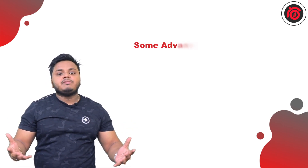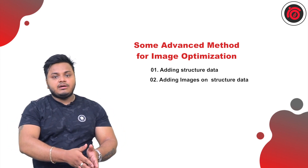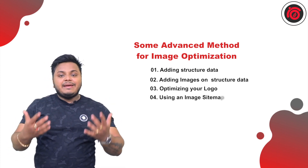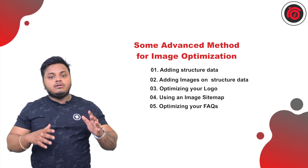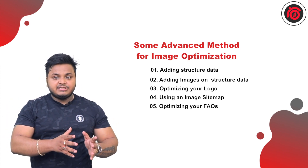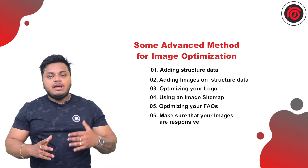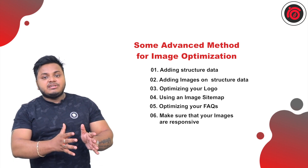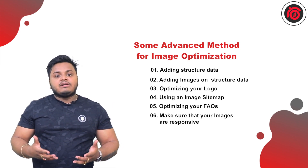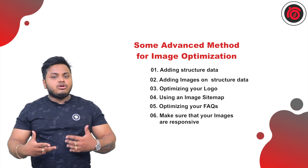Some of the advanced methods for image optimization are adding structured data, adding images in your structured data, optimizing your favicon, optimizing your logo, using an image sitemap, optimizing your FAQs or structured local schema for the images, and last but not the least, making sure that your images are responsive. You can also use latest strategies such as lazy loading, which can ensure that your core web vitals or page loading factors are not affected by any unwanted image bandwidth or resolution.